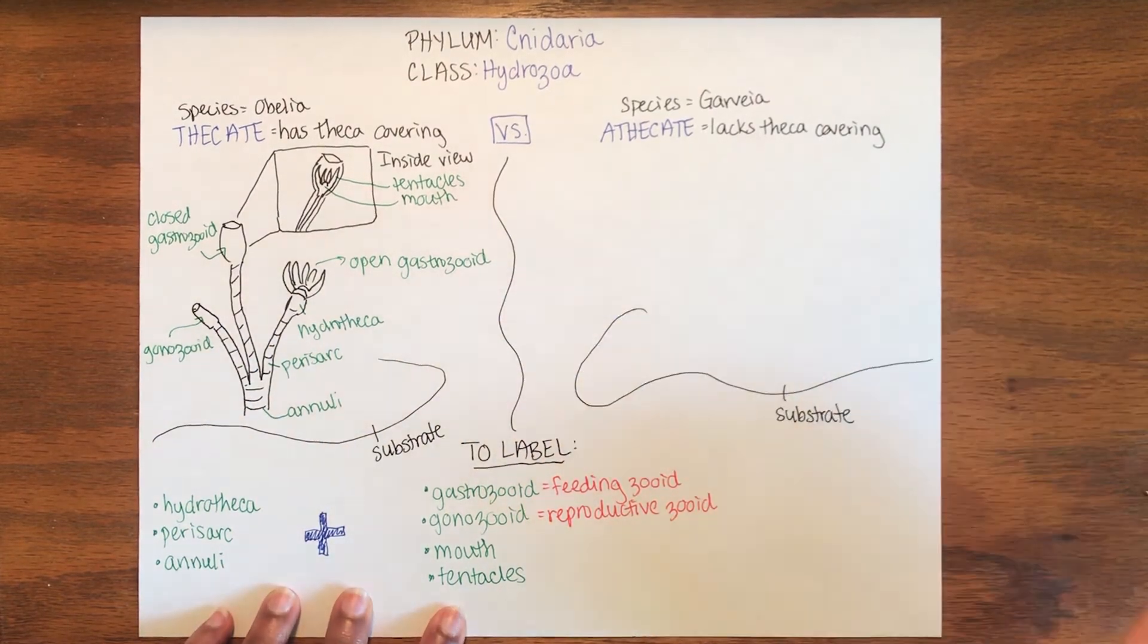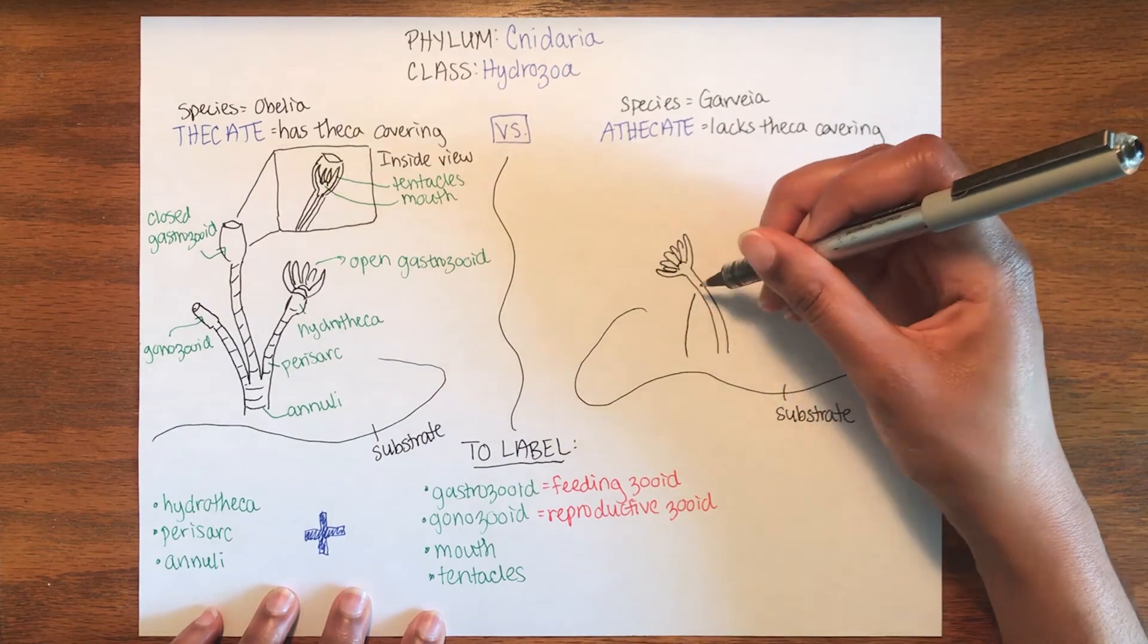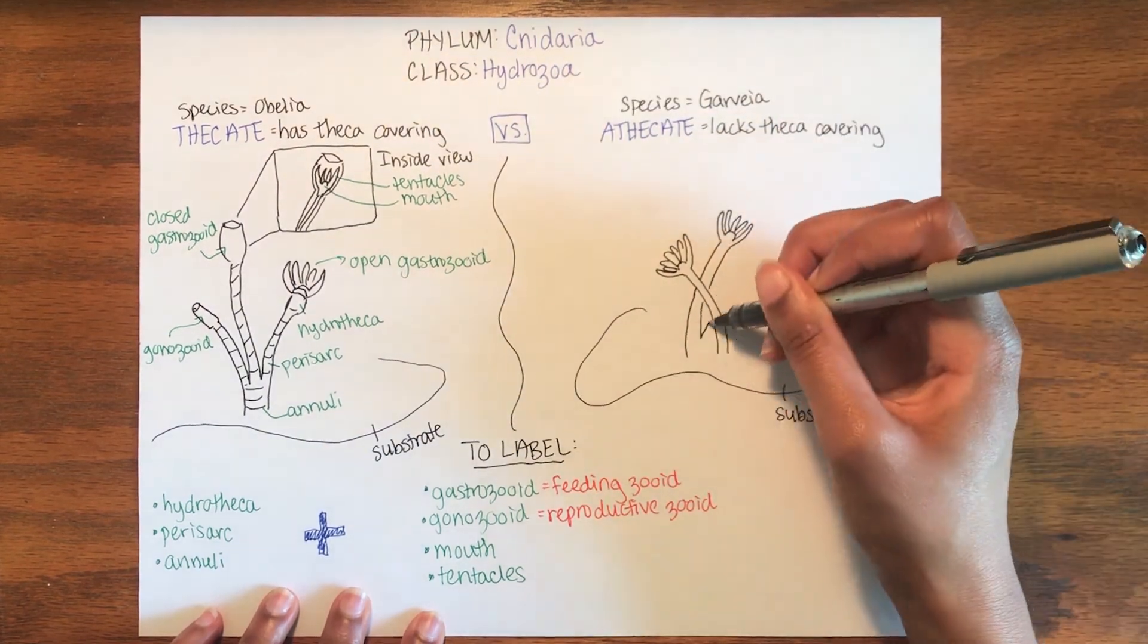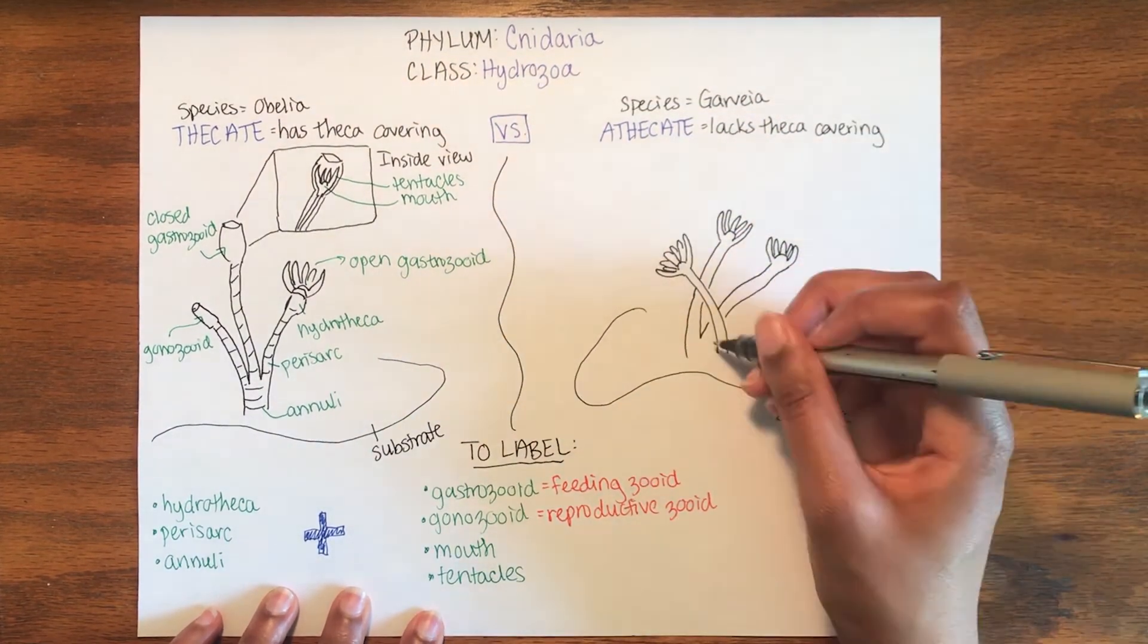Again, attached to a substrate, the athecate hydroid lacks a theca covering but are otherwise very similar to thecate hydroids.